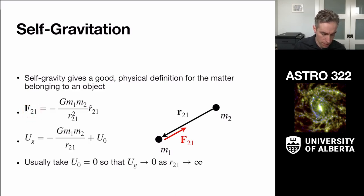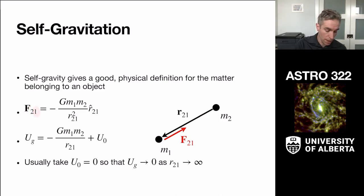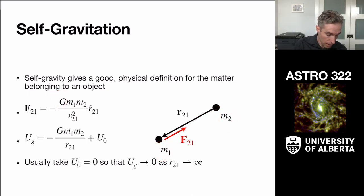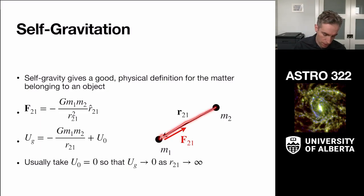This notation is important: F sub 21 is the force of object 2 on object 1. We write the magnitude of the force as G m1 m2 over r21 squared, and give it a unit vector to indicate direction. r21 is the vector from object 2 to object 1, m1 and m2 are the masses, and G is the gravitational constant. The negative sign indicates the force points backwards along that direction — the force is attractive, pulling the objects together.